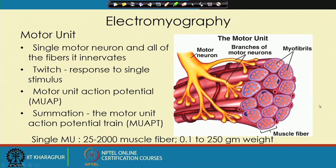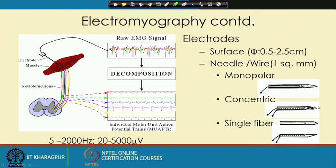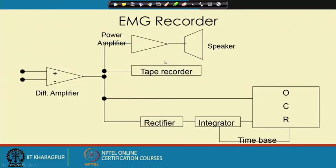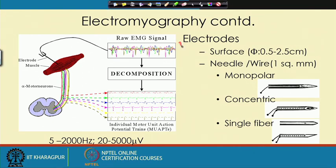Now let us move forward and see how the signal looks. Here some signals are shown. Usually we collect the signal from the skin, and there we would not be able to get the signal from a particular motor unit — the signals from multiple motor units are combined together and we get the combined signal. The combined signal looks a little irregular, but if we could decompose it we could get each unit's signal separately with its own characteristics.